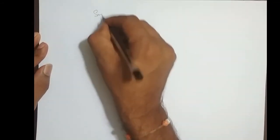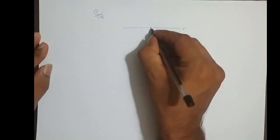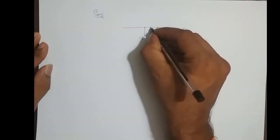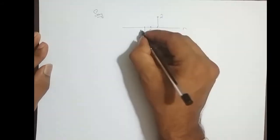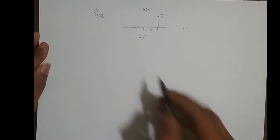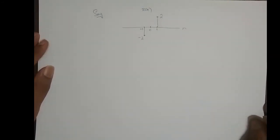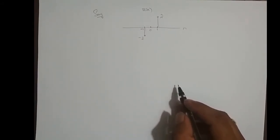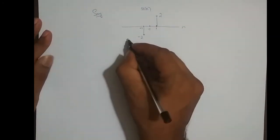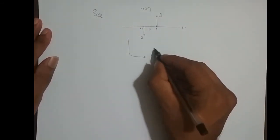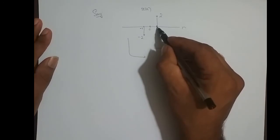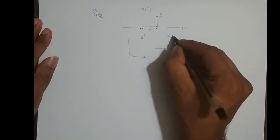Now say I need a signal like this: at n equal to minus 2 the amplitude is minus 1, at n equal to 0 it is 0, at n equal to plus 1 it is some value, and this is my x of n. How do I represent this x of n in terms of the unit impulse function? I can split this signal into the sum of 3 impulse functions. The first signal contains only the impulse at n equal to minus 1, the second contains the impulse at n equal to 0, and the third contains the impulse at n equal to 1.